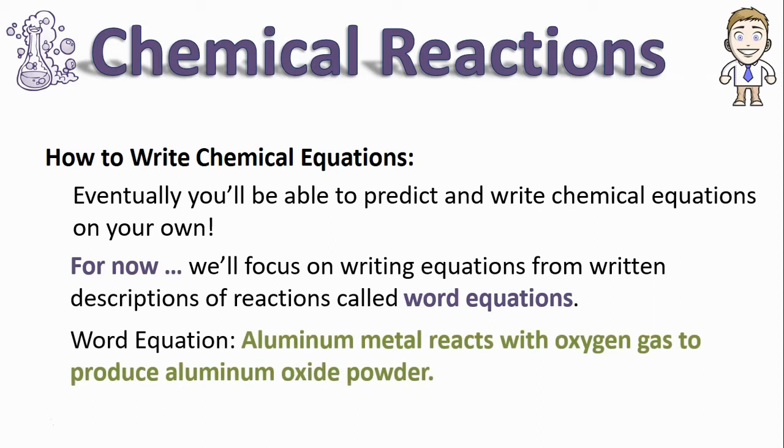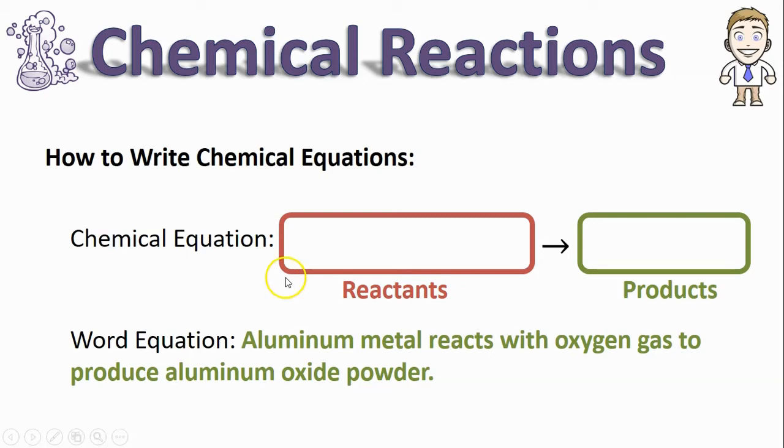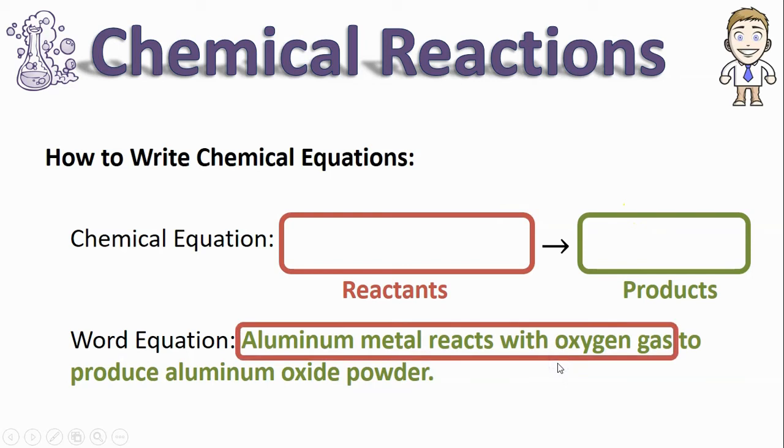Aluminum metal reacts with oxygen gas to produce aluminum oxide powder. To turn this sentence into a chemical equation, remember that you just have to identify the reactants first, followed by the products. Usually, this is pretty easy to find—you'll see words like 'reacts with.'